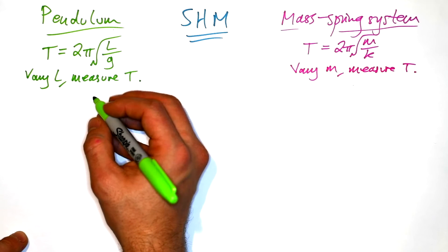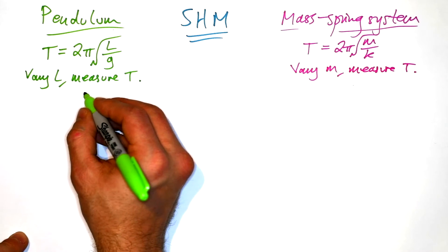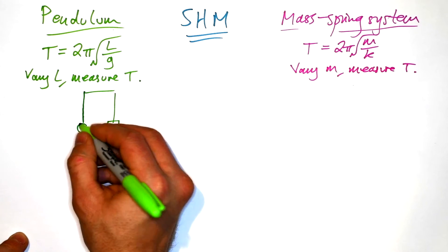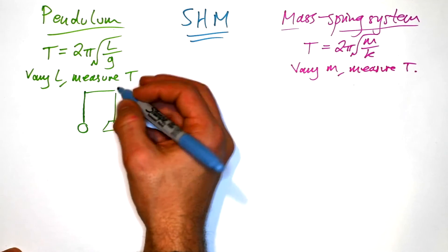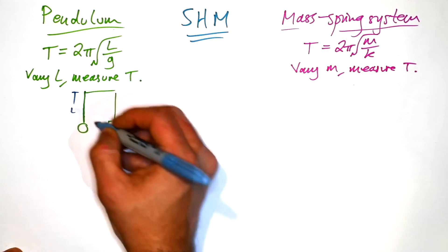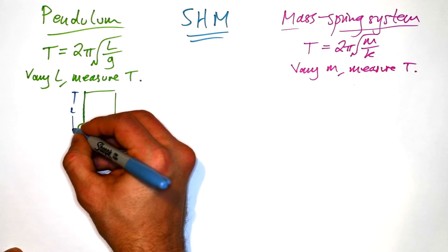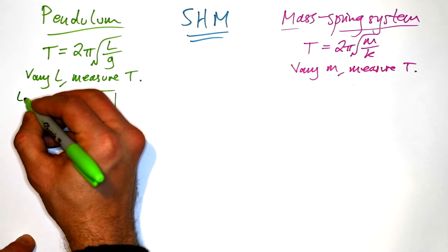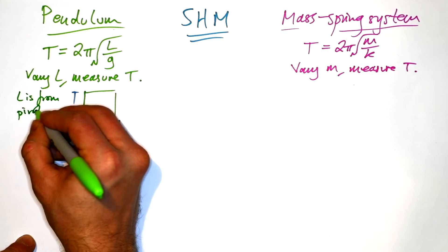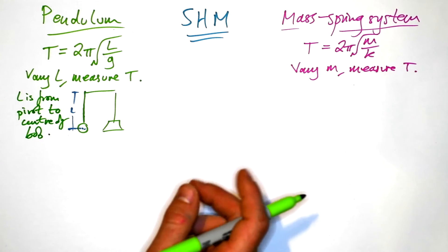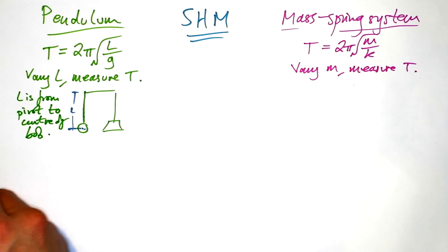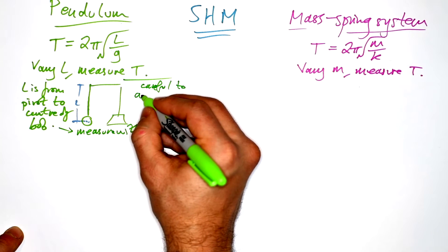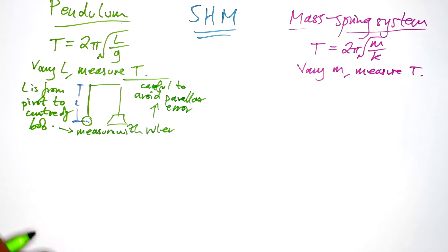So the setup for the pendulum is as follows. We want to have a clamp stand, a retort stand, holding our pendulum. And there's our string with our bob on the end. Now, you have to be careful with the length of the string. The length of the string is from where it pivots to the center of the bob, because we want to go for the center of mass. So L is from pivot to center of bob. If you measure to the top or the bottom, then you're introducing a systematic error. And we want to measure that with a ruler. We want to be careful to avoid parallax error by having the ruler close to the piece of string.